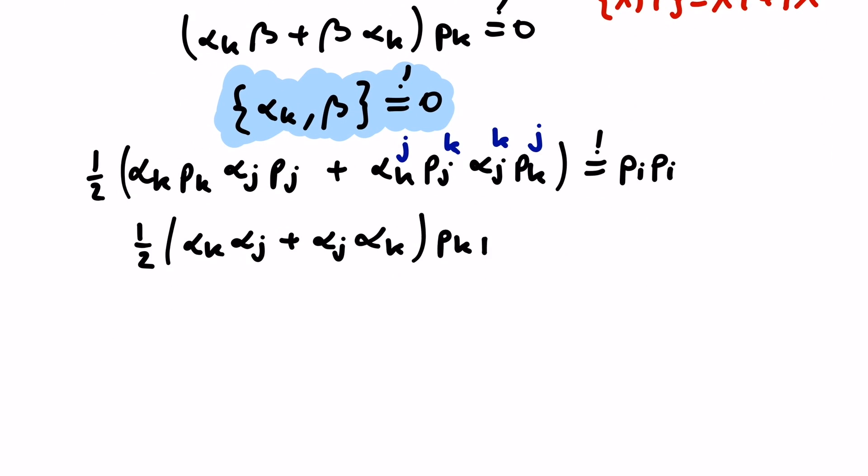But now we can pull out a pk pj to the right, and we're left with an anticommutator again. Meaning that the anticommutator of alpha k alpha j has to be two times the Kronecker delta kj. Now we finally have our third condition.